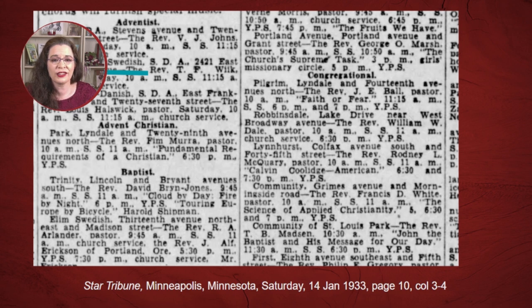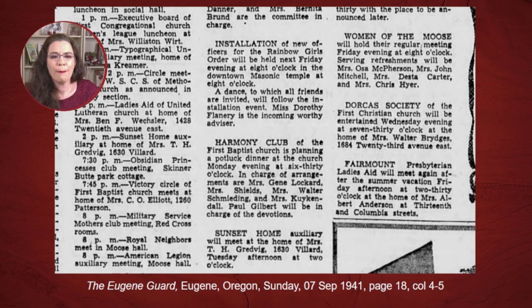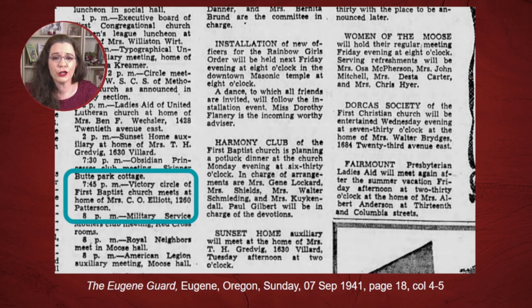Many newspapers will list meeting times and places. For instance, notice the ethnicity-based congregations in Minneapolis, Minnesota. One is for the Swedish Seventh-day Adventist group and another serves the Norwegian-Danish Seventh-day Adventist. Within a religious group, there might be smaller groups that had meetings. And in this case, it is the victory circle of the First Baptist Church in Eugene, Oregon. Notice that Mrs. C. O. Elliott will host the meeting in her home.